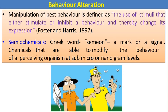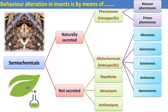Semiochemical is a Greek word. 'Semio' means a mark or signal. It means that the chemicals that are able to modify the insect behavior of a perceiving organism at a sub-microgram and nanogram level — that is the semiochemicals.